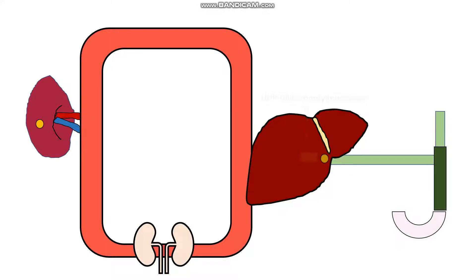This conjugated and soluble bilirubin can now be released into our bile ducts, where it will make its way into our small intestines, or it may sit in our gallbladder for a time. In our small intestines, it will be acted on by gut bacteria and often broken down into urobilinogen. About 90% of this urobilinogen will be converted into stercobilinogen, which is the pigment that gives feces its color. Around 10% of the urobilinogen, however, will be actively reabsorbed in our gut into the blood, where it may then be excreted via our renal system.